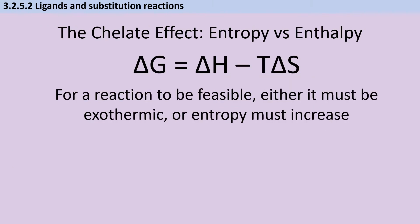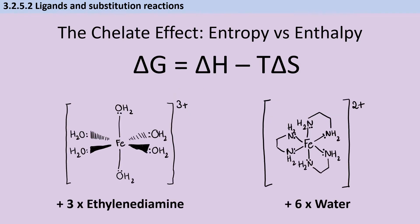We learned in the thermodynamics topic that for reactions to be feasible, either they need to be exothermic with negative enthalpy change, or they need to cause a large positive increase in entropy. When a bidentate ligand such as ethylenediamine replaces a monodentate ligand such as water, four particles—the three ethylenediamine ligands and one original complex—are replaced by seven: the six substituted ligands and one new complex. This increase in particles increases entropy and makes this substitution extremely feasible. We call this the chelate effect.